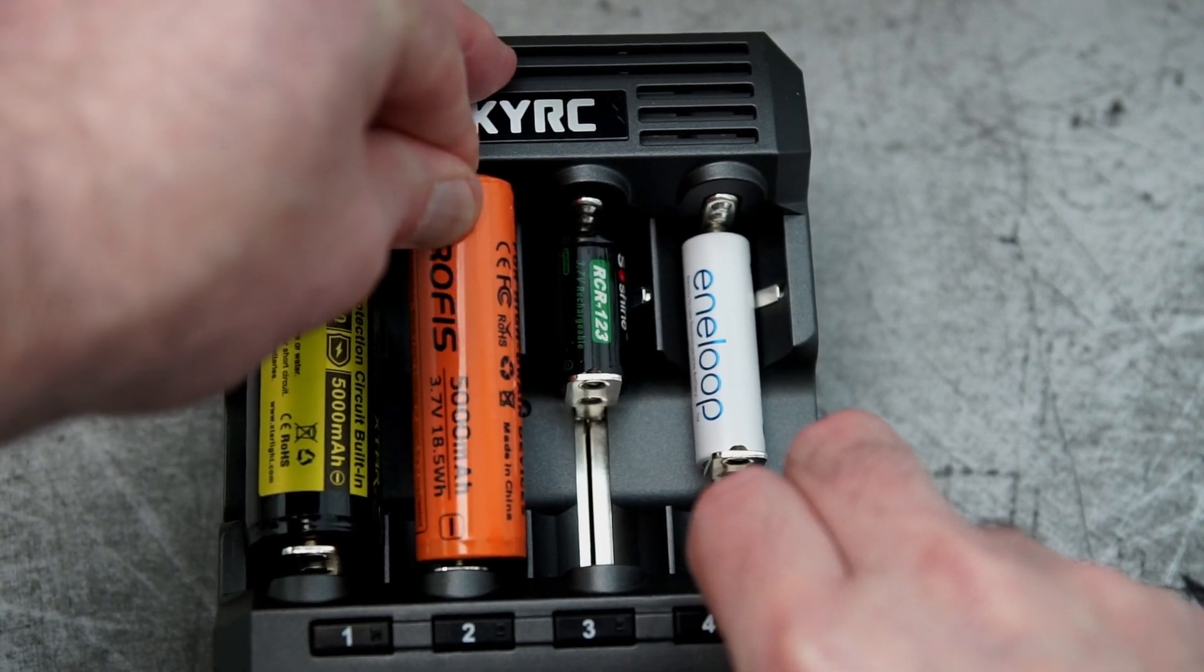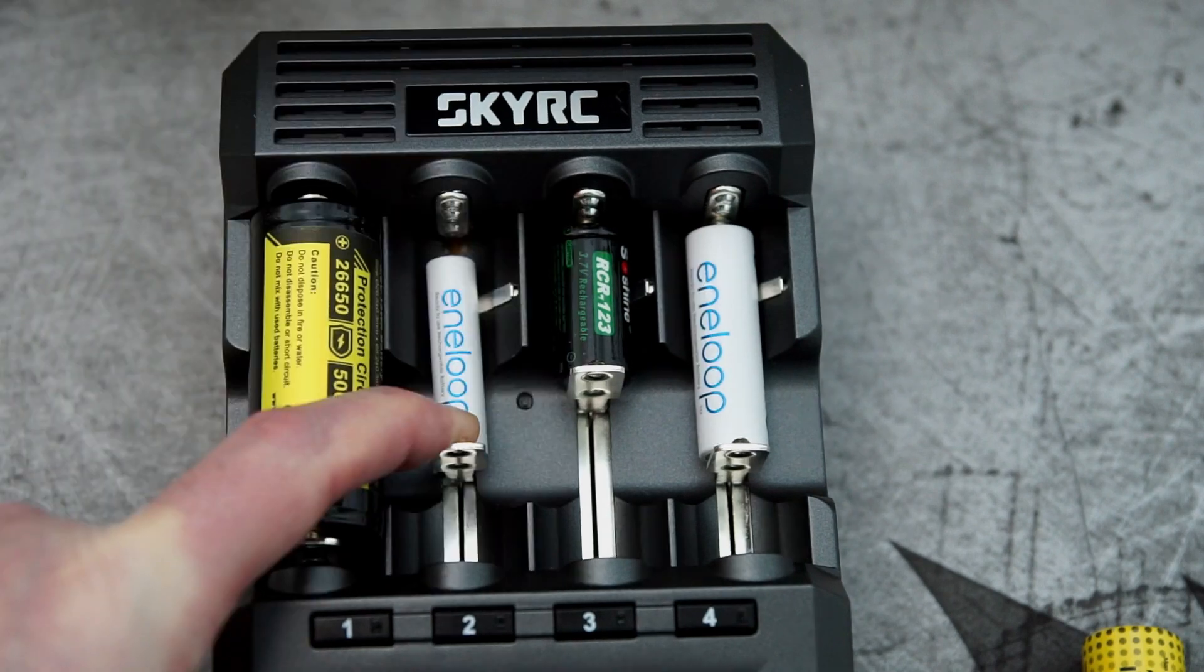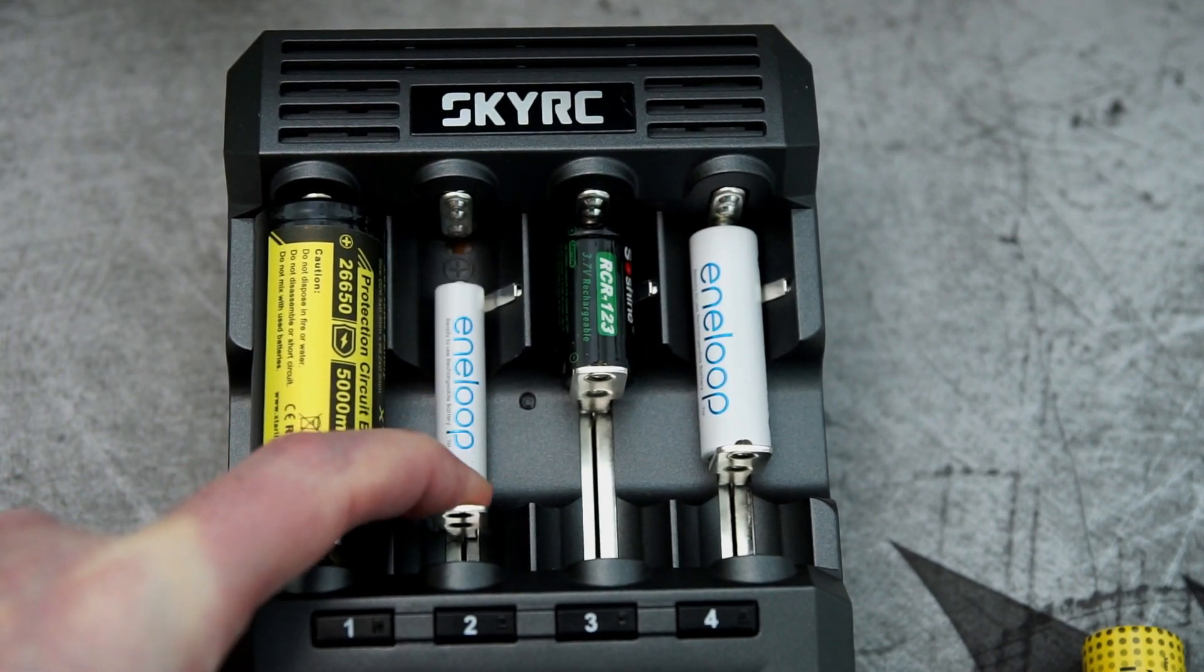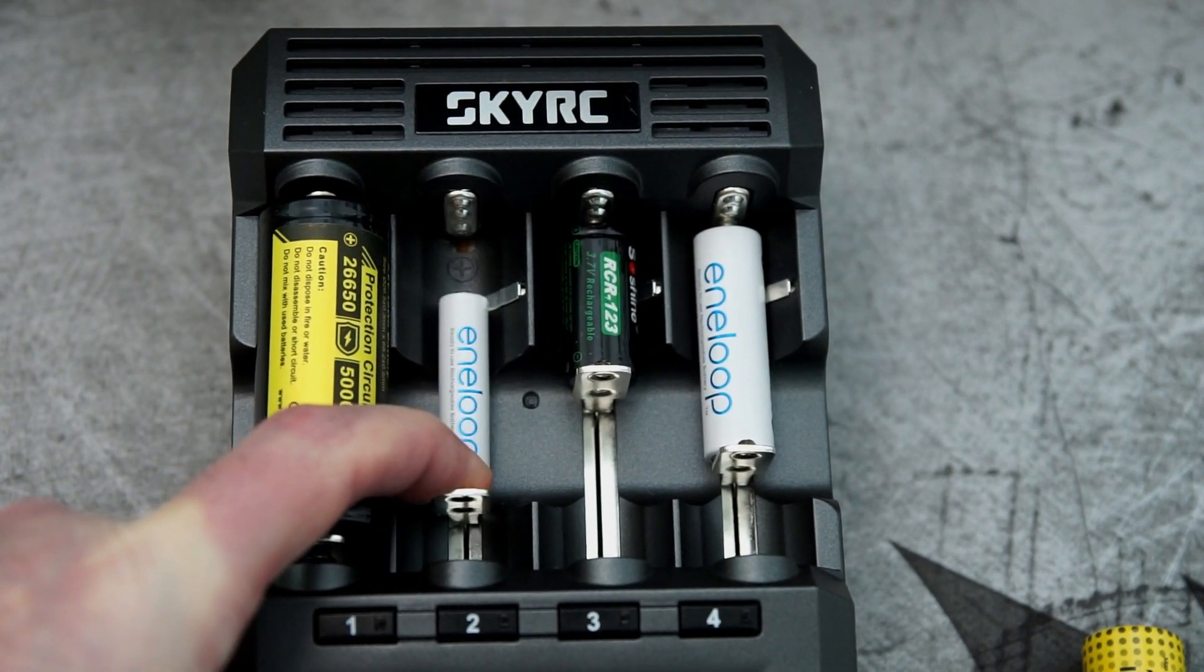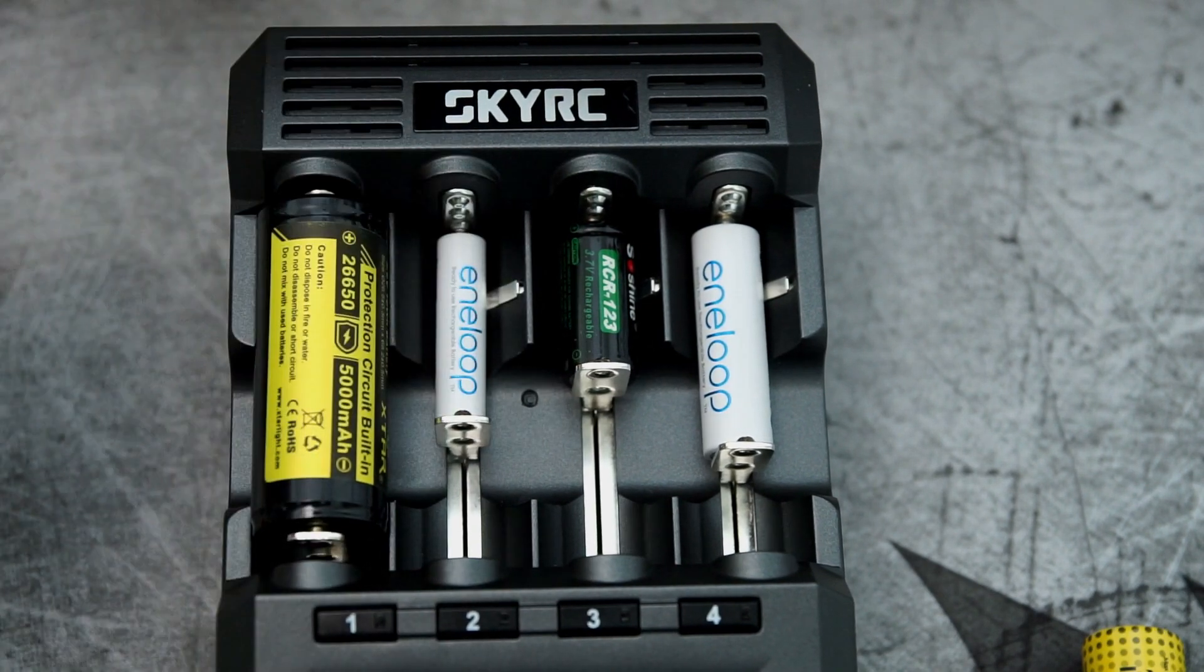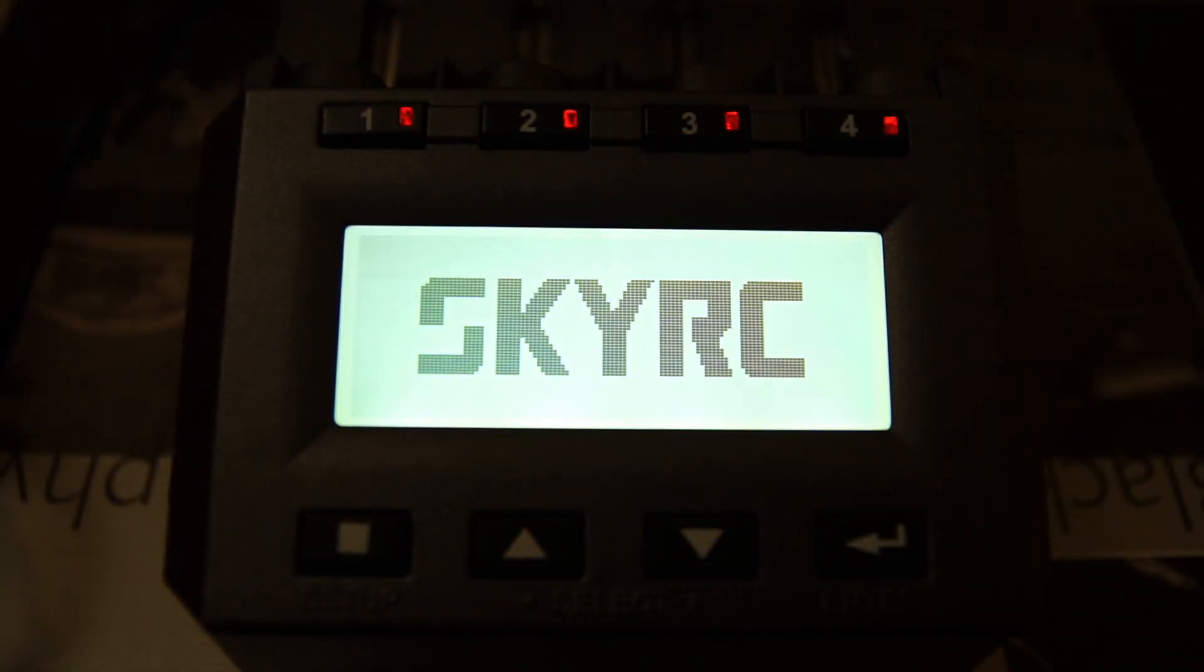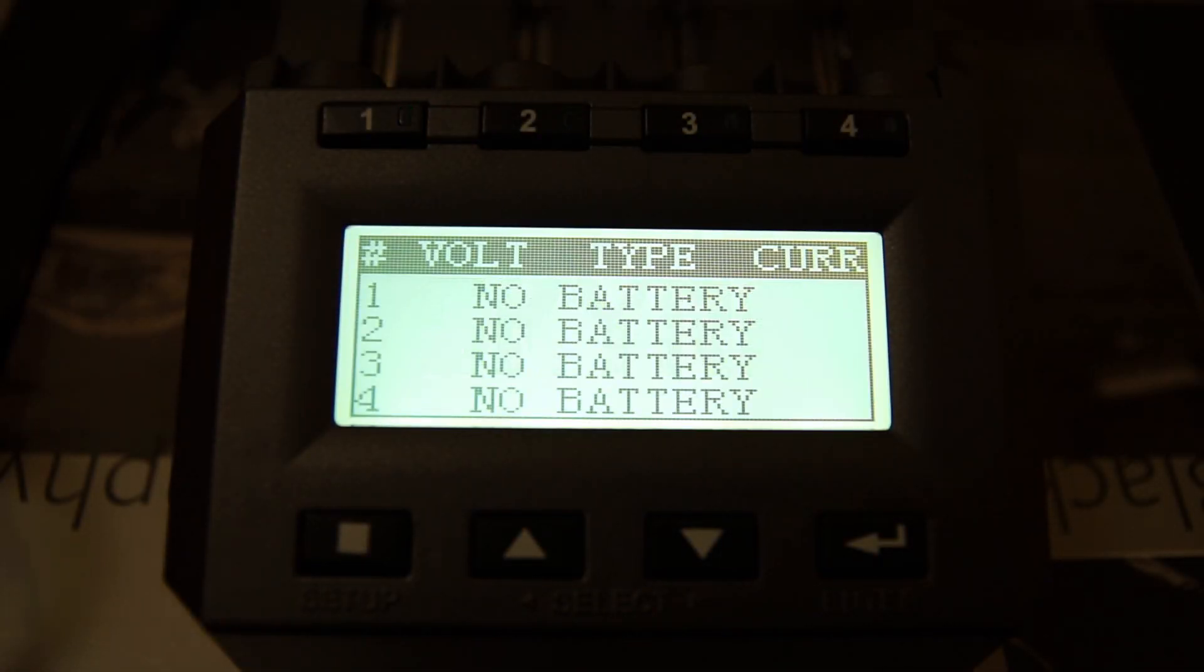Here's a protected 21700 cell and unfortunately we can't fit this into the charger. Needs about another three or four millimeters just to give a bit of extra clearance. Slightly disappointed on that because it has been revised, the hardware, so it'd be nice if they could have made those slots a little bit longer.